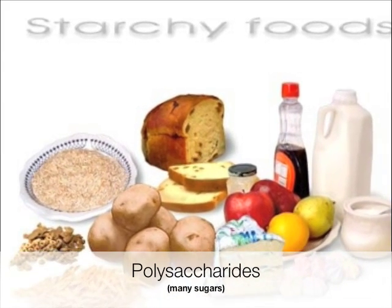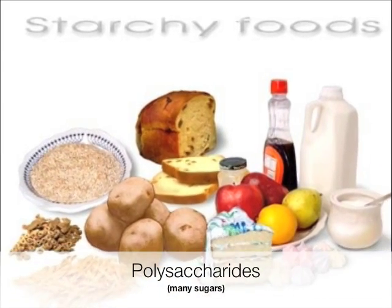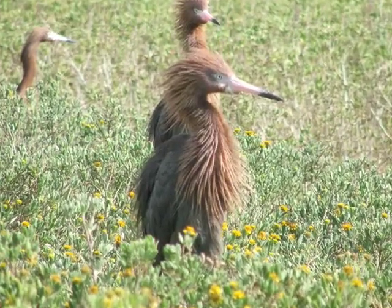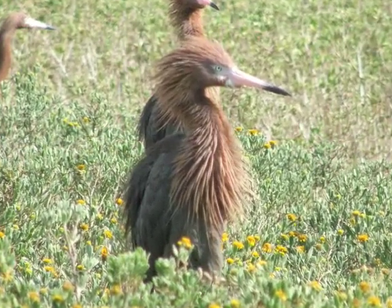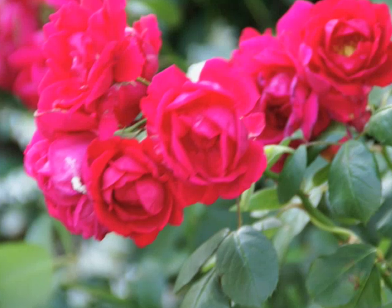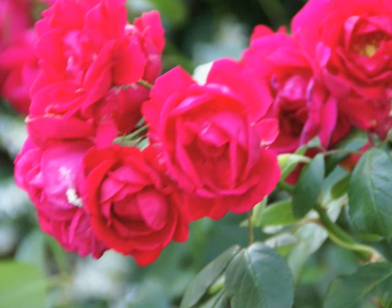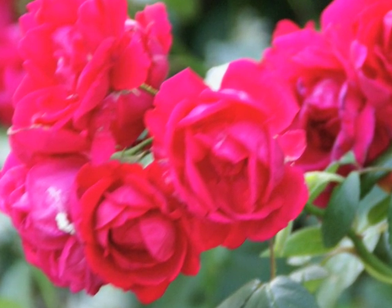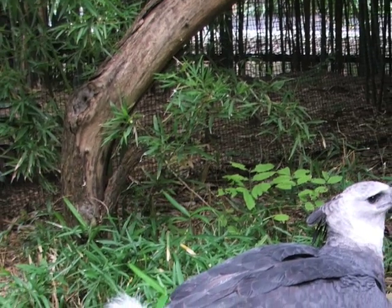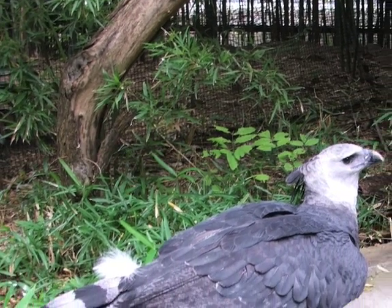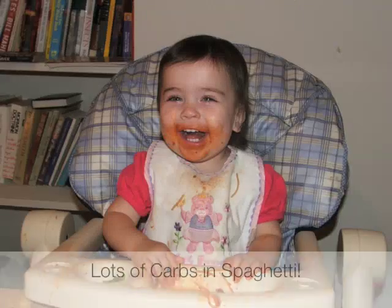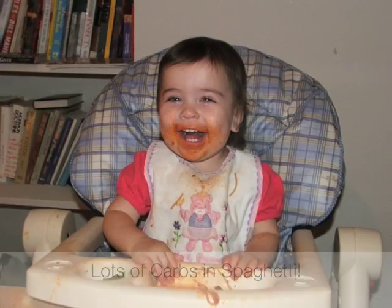Polysaccharides are long chains of simple sugars. Organisms use polysaccharides as quick storage — glycogen in animals and starch in plants. Cellulose is another polysaccharide that provides structural support for plants; it makes up the cell wall. Humans cannot digest cellulose. Thus, you cannot eat a tree.